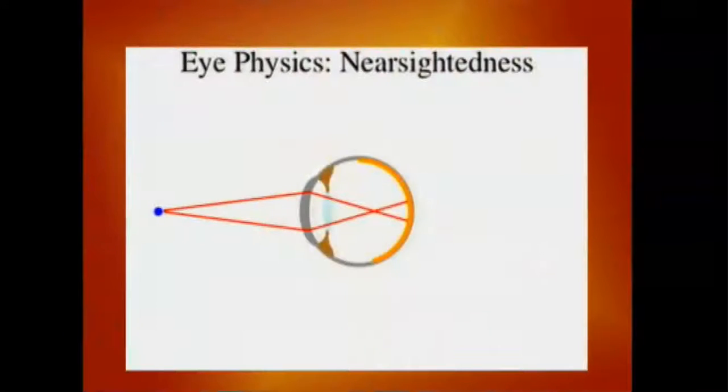What about nearsightedness? Nearsightedness is the opposite condition. In nearsightedness, the eye is too strong. It focuses the light to a focus before it hits the retina. So, here it is, and by the time the light reaches the retina, it's no longer in focus. So, what are you going to do? Pause a minute and think about that.